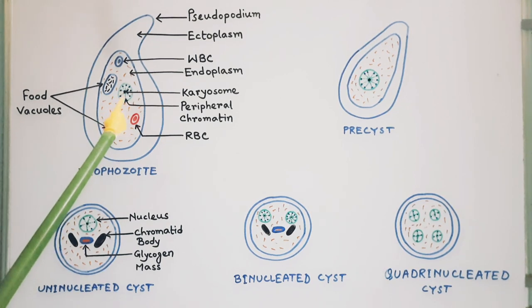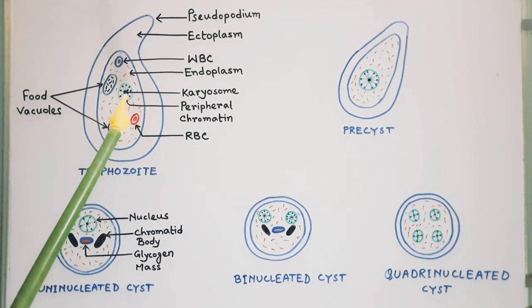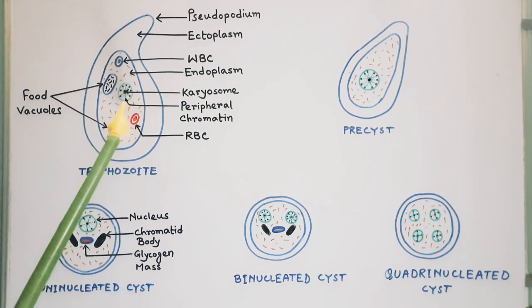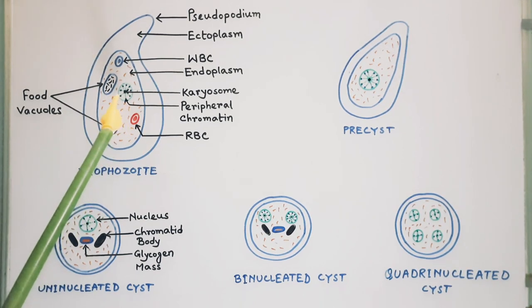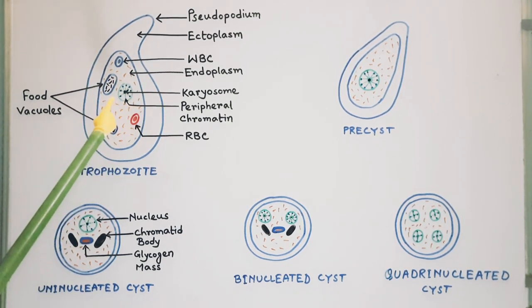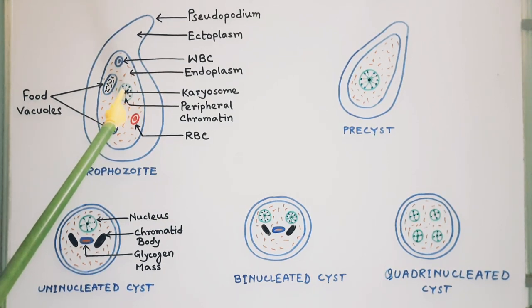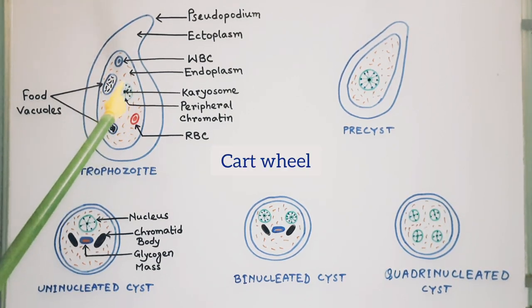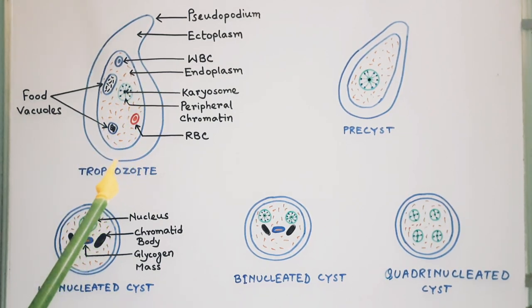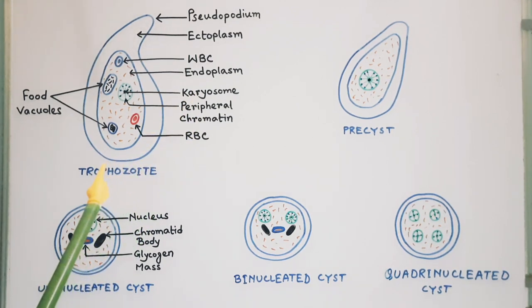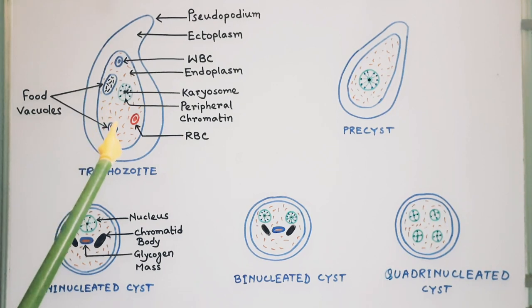The nucleus is spherical, 4 to 6 micrometers in diameter, and contains a central dot-like compact karyosome surrounded by a clear halo. The nuclear membrane is thin and delicate, lined by a layer of fine chromatin granules. The number of chromosomes varies between 30 and 50. The space between the karyosome and the nuclear membrane is traversed by spoke-like radial arrangement of achromatic fibrils, giving a cartwheel appearance. Trophozoites are anaerobic parasites that lack mitochondria, endoplasmic reticulum, and Golgi apparatus. They divide by binary fission every eight hours but cannot initiate infection.